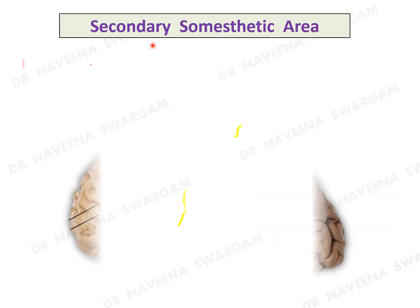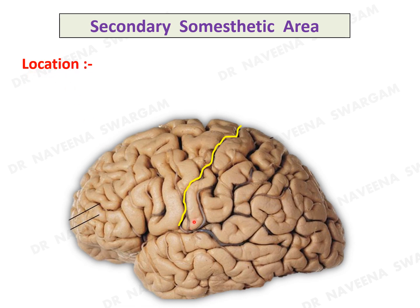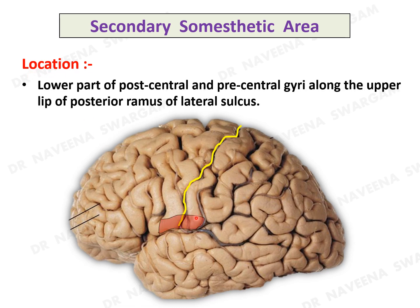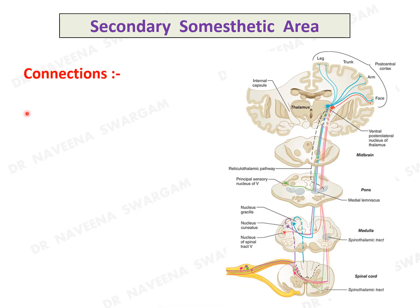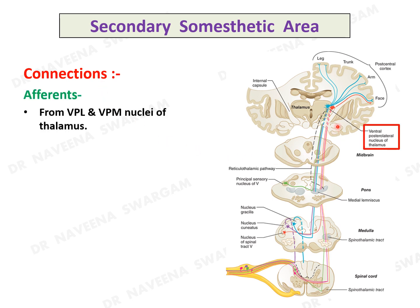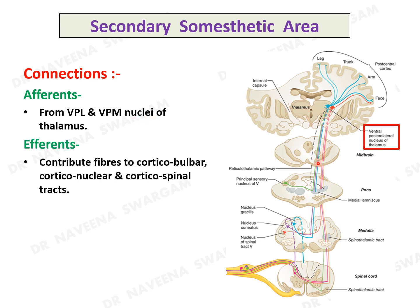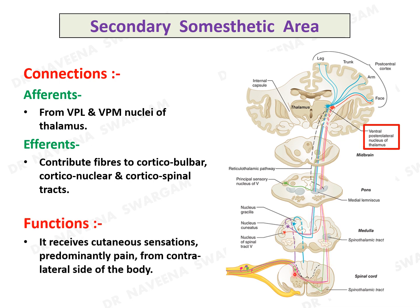Secondary somesthetic area lies in the lower part of the postcentral as well as precentral gyrus along the upper lip of the posterior ramus of the lateral sulcus. Its connections are similar to the primary somesthetic area — it receives major afferents from the ventroposterolateral and ventroposteriomedial nuclei of the thalamus, and efferents contribute to corticobulbar, corticonuclear, and corticospinal tracts. It receives cutaneous sensations, predominantly pain, from the contralateral side of the body.